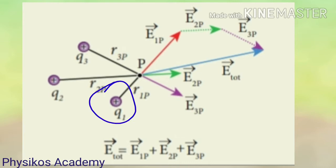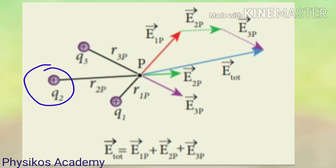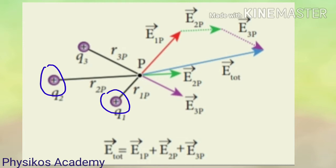Q1 is a point charge, positive charge. Q2 is again a positive charge. Q3 is a positive charge. Three positive charges are located at various places.